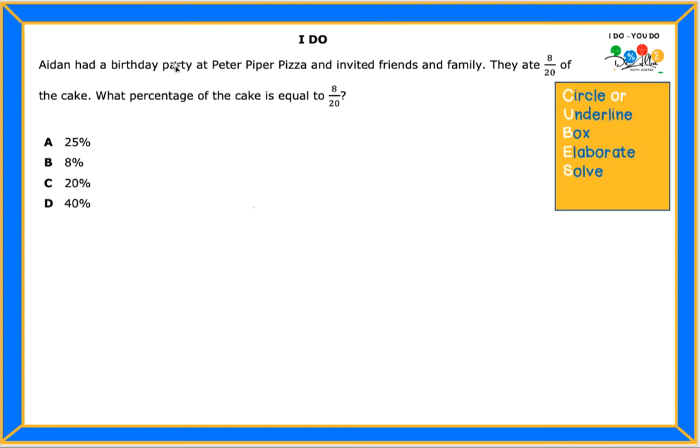Hello! Okay, let's read the question. Aidan had a birthday party at Peter Piper Pizza and invited friends and family. They ate 8 out of 20 of the cake. What percentage of the cake is equal to 8 over 20?